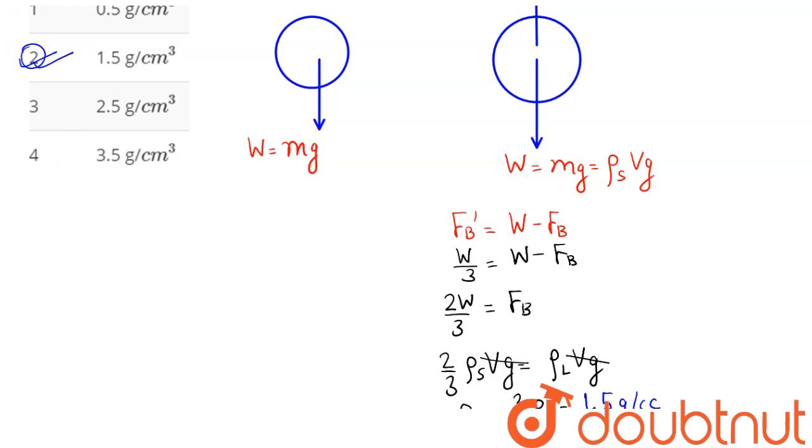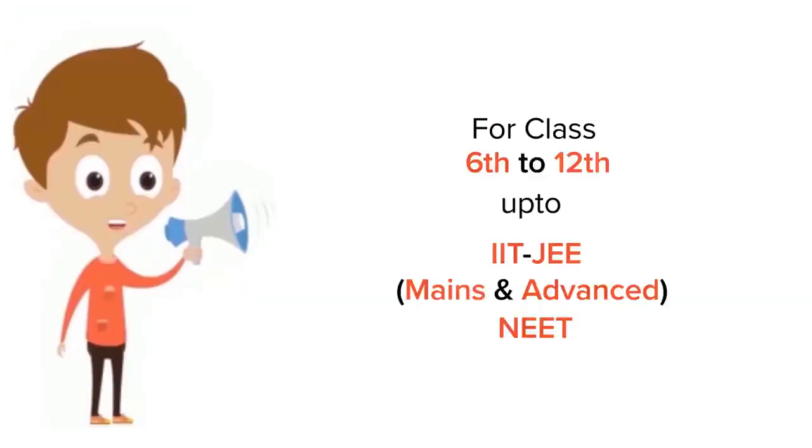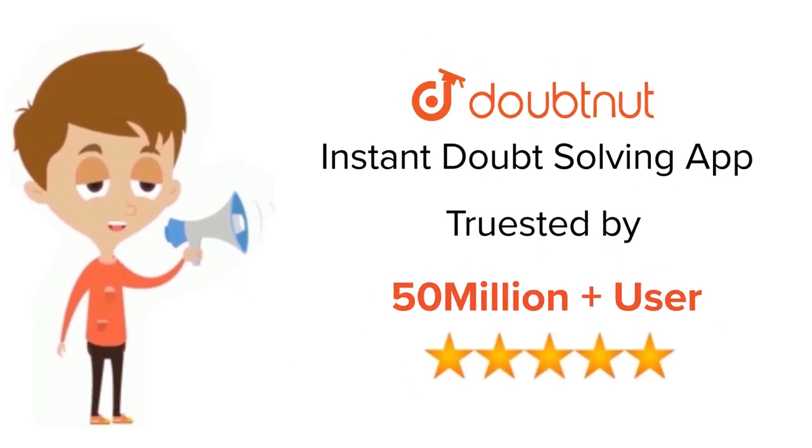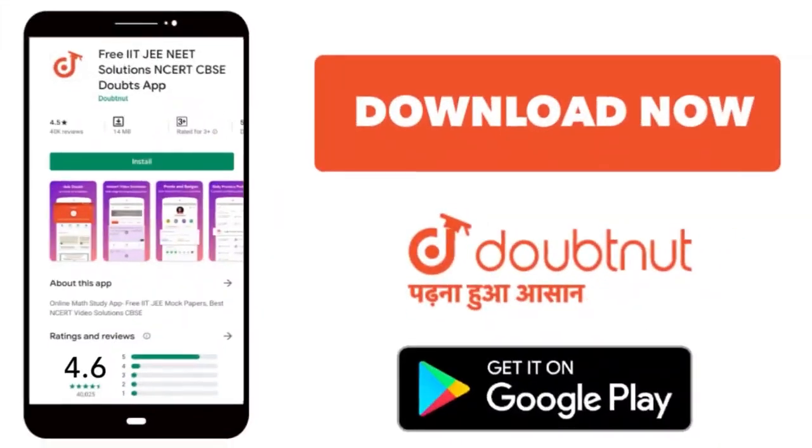So two is our answer. For class 6 to 12th, IIT JEE and NEET level, trusted by more than five crore students. Download Doubtnet app today.